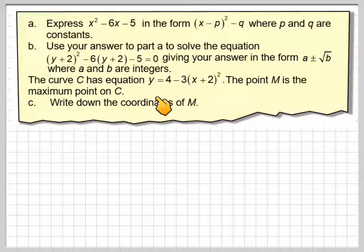The curve C has equation y = 4 - 3(x + 2)². The point M is the maximum point on C. Write down the coordinates of M.